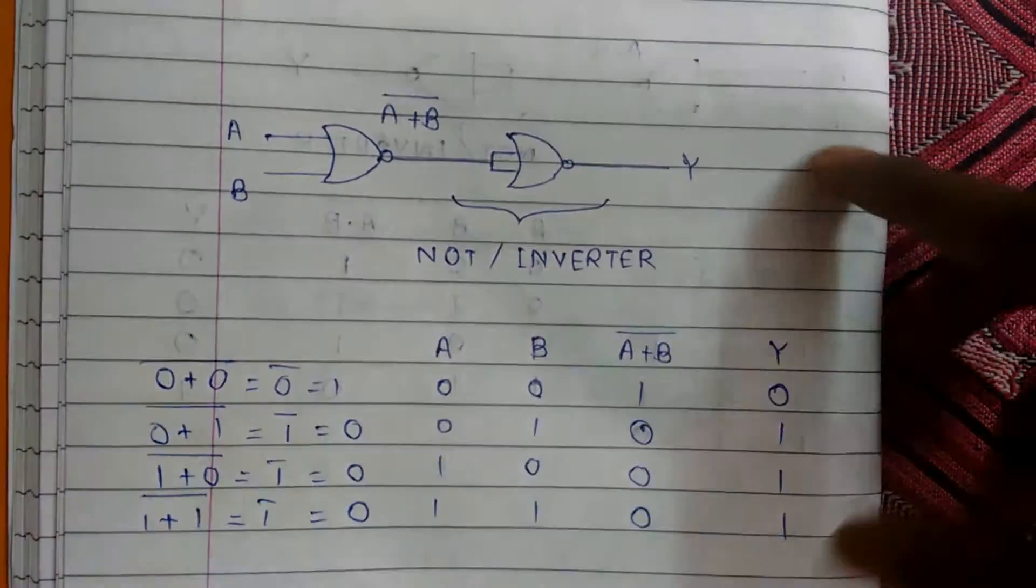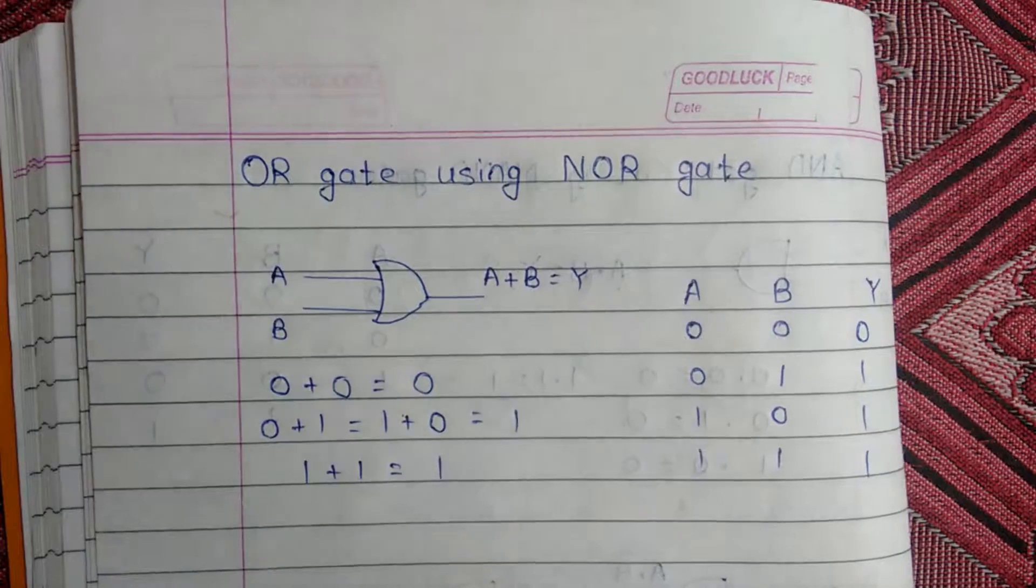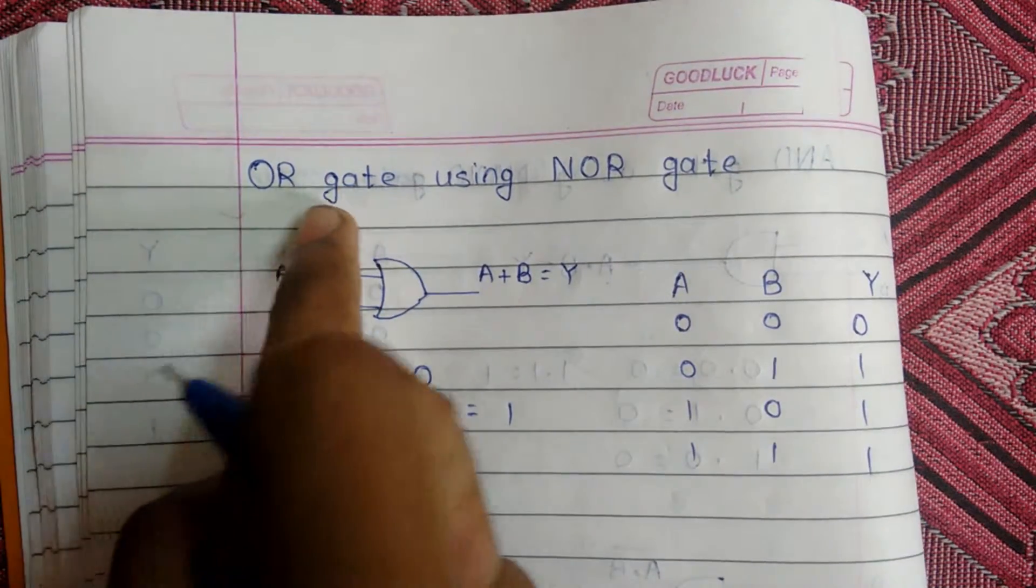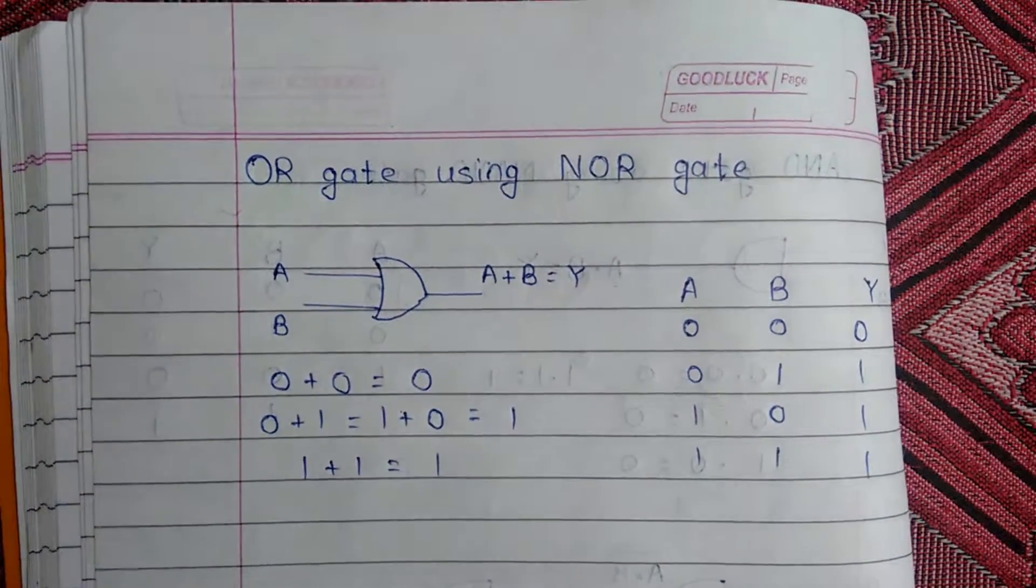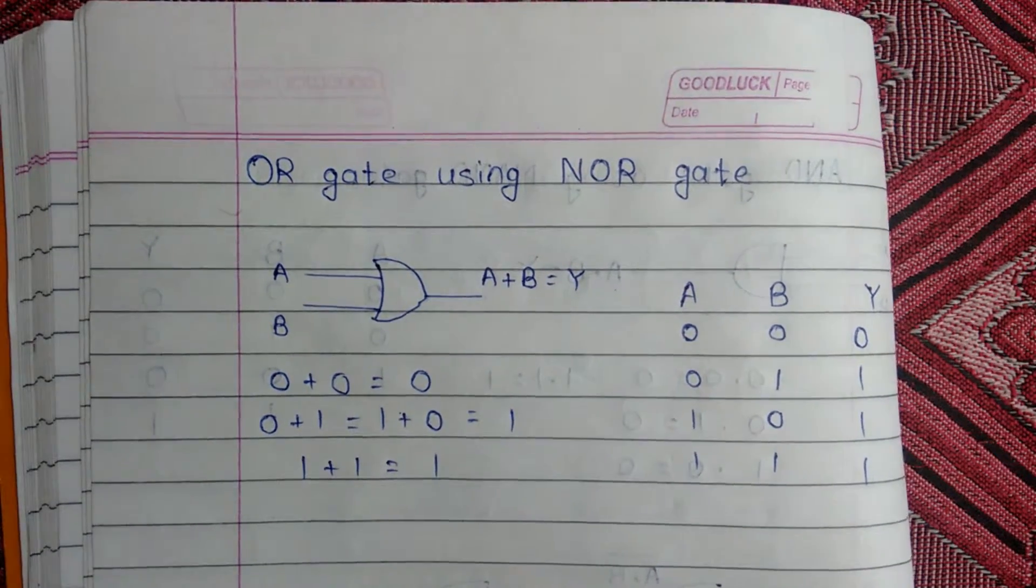If you compare this truth table with our previous one, then both are same. So here we have constructed OR gate using NOR gate. Thank you for watching the video. If you like it, then please share it with your friends.